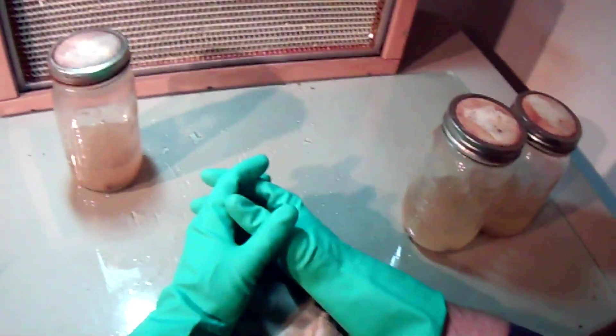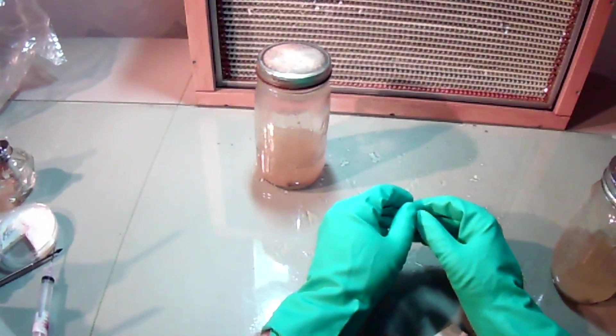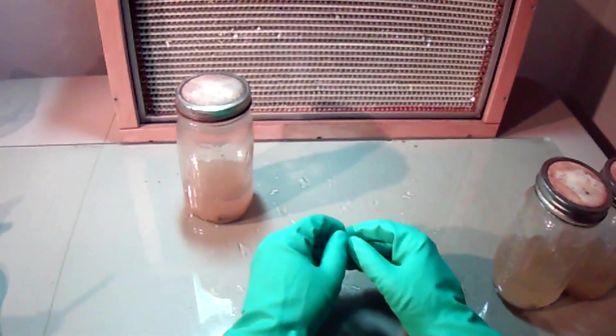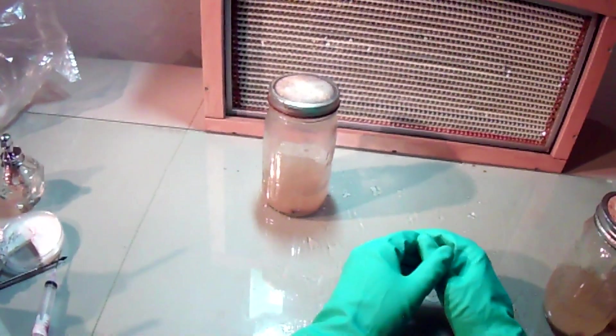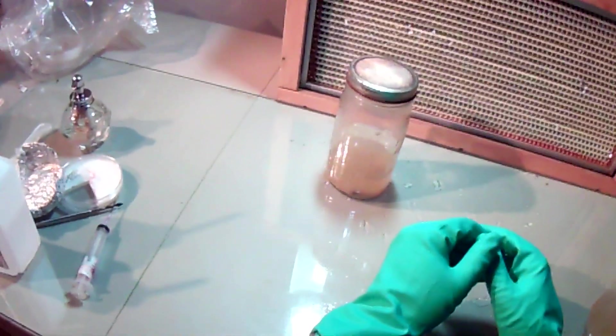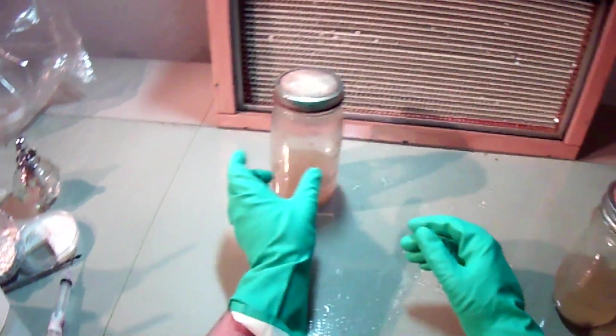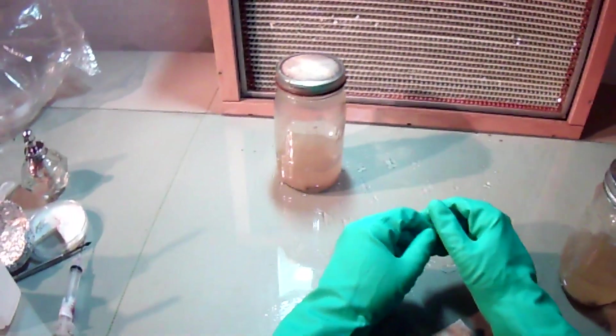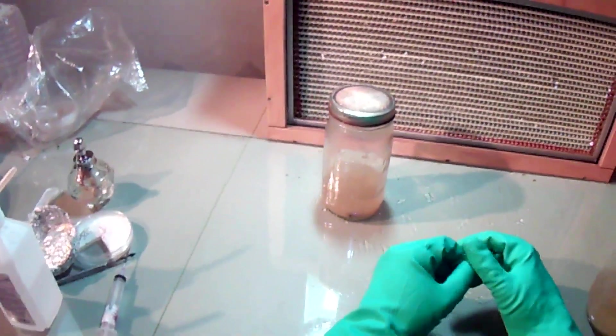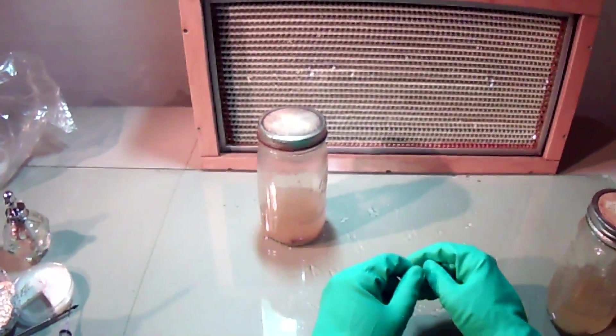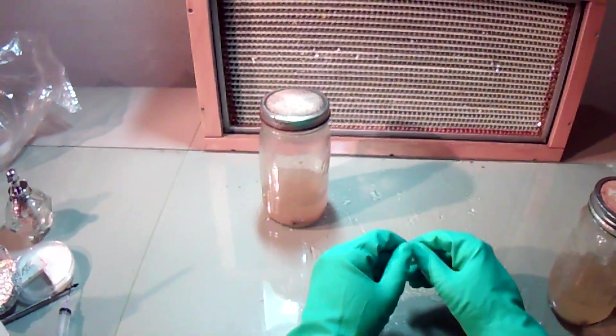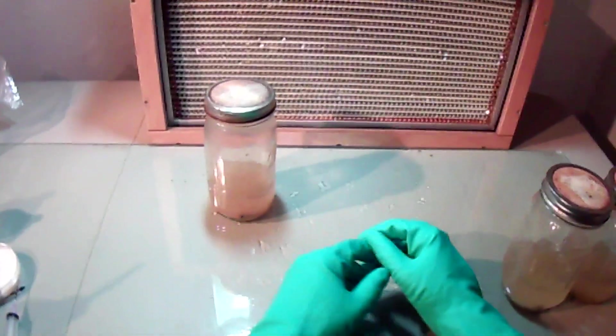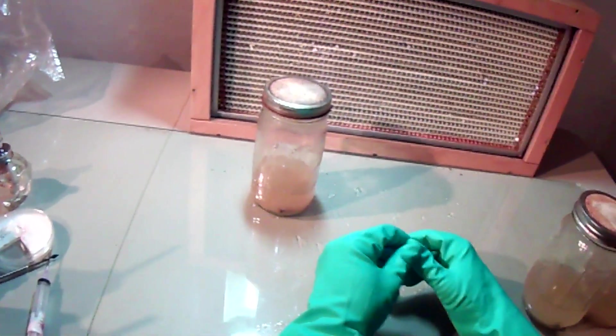Well, I guess that concludes on how to do the liquid cultures. Now we'll get into how to make the grain spawn using preferably rye grain. We'll use these liquid cultures to inoculate that grain, which will then inoculate the straw or whatever substrate we're using to fruit the mushrooms in our basement or wherever area you're doing.